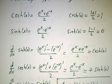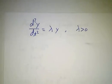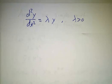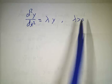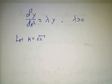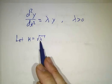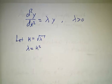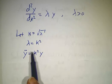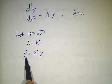Which set of functions you use is up to you, but there are real advantages to using cosh and sinh. Now let's look at our differential equation: y'' = λy where λ is positive. We define a constant κ, which is the square root of λ, so λ = κ². Our differential equation becomes y'' = κ²y.